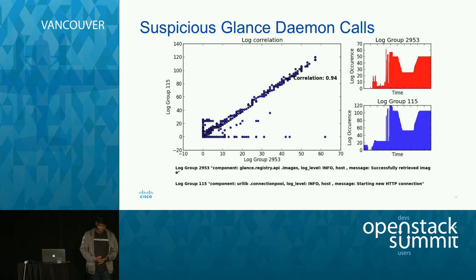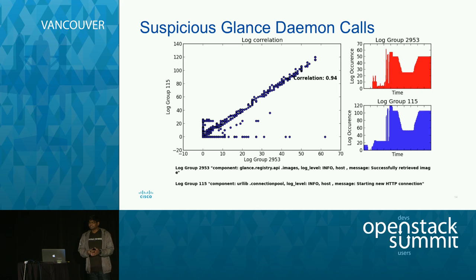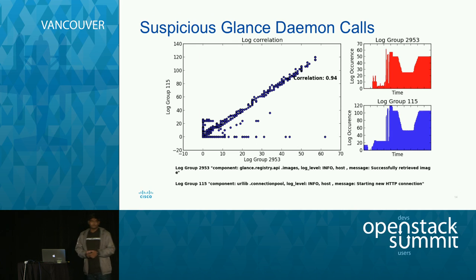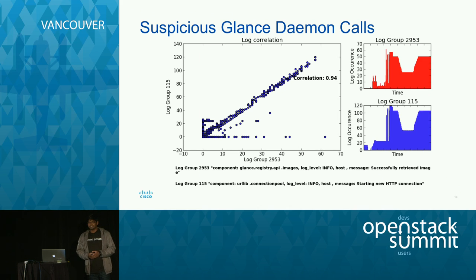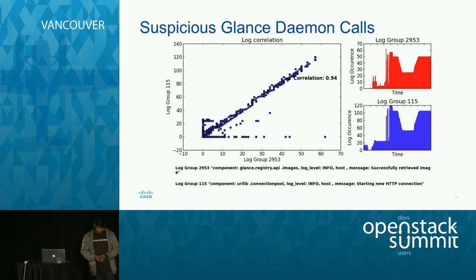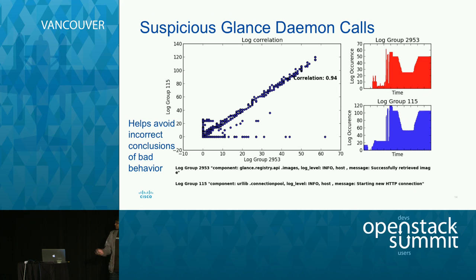Then we found something very weird again. We saw that Glance, which is supposed to create logs only when we are creating images, snapshots, or VMs, was actually creating logs even after we were done with VM creation. A cluster admin might think something is seriously wrong. But when we dug deeper because of this analysis, we found there is a background Glance daemon running, which is actually making these HTTP GET calls through the API gateways. Using this analysis, we can avoid all the bad conclusions we might make about the OpenStack cluster.